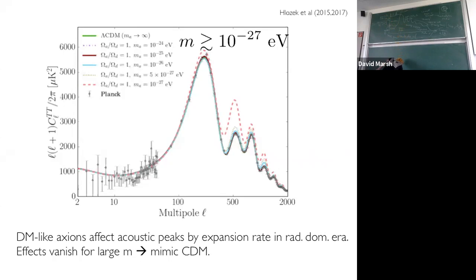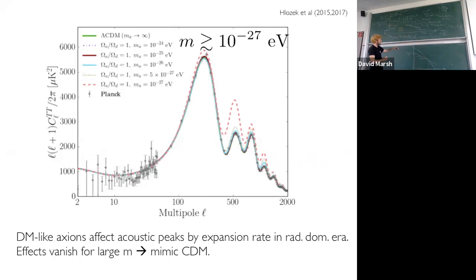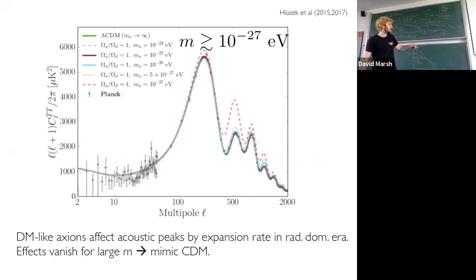Let me sketch on the board what I mean. I've got the log of the energy density and log of the scale factor. Radiation goes like 1/a^4, CDM like 1/a^3. I'm moving the transition back to smaller values of the scale factor as I increase the axion mass — so you're increasingly subdominant to the radiation. The expansion rate increasingly doesn't see the effect of that change. The heavier axions' effect vanishes compared to Lambda CDM, and you approach Lambda CDM as you take the axion mass to infinity — where 'close enough to infinity' is 10^{-24} eV.